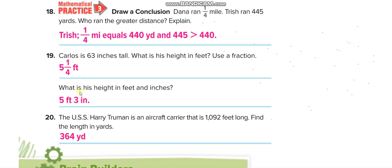The USS Harry Truman is an aircraft carrier that is 1092 feet long. Find the length in yards. You guys know that one yard is equal to 3 feet. Now we are converting from feet to yards, from a smaller unit to a larger unit.